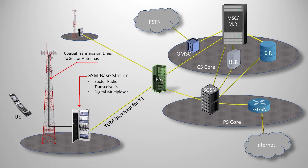Greetings everyone. In the last video we explored all things GSM, which introduced the world to digital mobile telephony and ushered in some usable mobile computing, especially when the core network expanded to packet switching elements used for GPRS. This would also introduce the first iPhone, which would really change networks as they desperately needed to address data rates, and UMTS and HSPA networks would do just that.